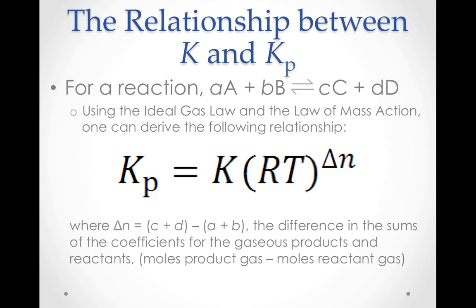Using the ideal gas law and the law of mass action, the following relationship between K and Kp can be derived. Kp is equal to K times the quantity RT to the power of delta n. R is the universal gas constant, and delta n is the difference in the sums of the coefficients for the gaseous products and reactants. In other words, delta n is moles of product gas minus moles of reactant gas.